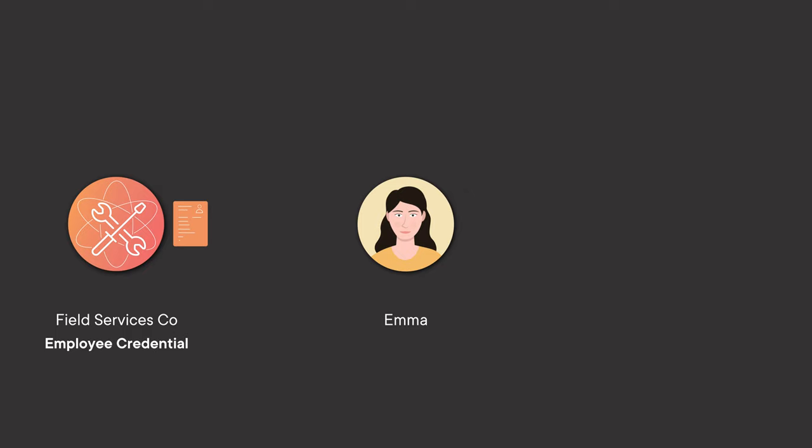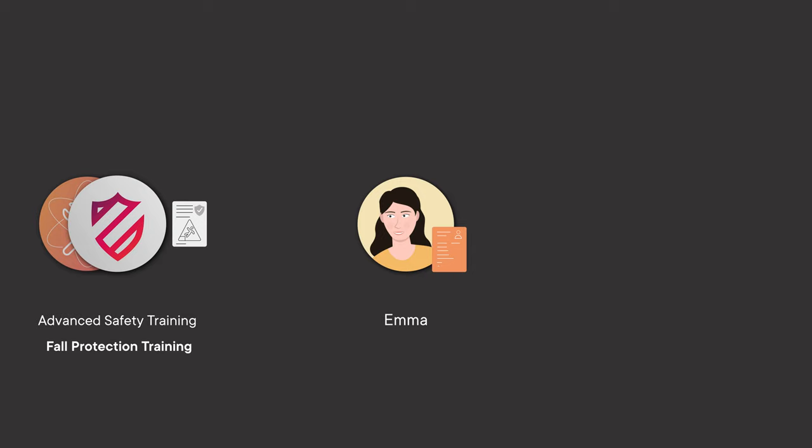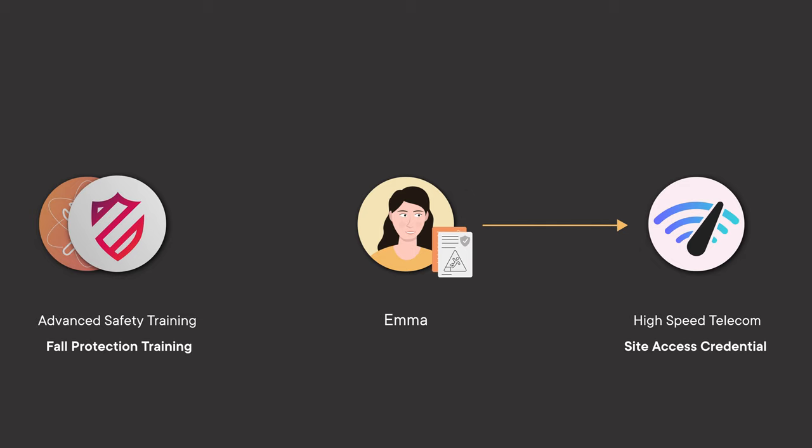Hi, I'm Preet and I'm a developer advocate here at Meta. Today we're going to be continuing the Emma journey that Luke and John established in the part one video. I'm going to show you how to set it all up using Mattr7 and Auth0. I'm not going to show you the full code setup — rather we're going to focus on getting Emma her employee credential and then using that alongside her full protection training credential to verify her site access eligibility with a company like High Speed Telecom. So let's get started.